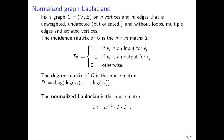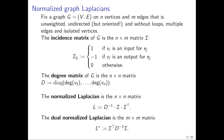One way to define the normalized Laplacian is as the n×n matrix defined as the inverse of the degree matrix — which is well-defined because every vertex has degree greater than zero — times the incidence matrix times the transpose of the incidence matrix. Following the idea of considering the dual problem, we also define the dual normalized Laplacian as the m×m matrix defined as the transpose of the incidence matrix times the inverse of the degree matrix times the incidence matrix.